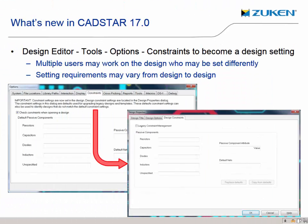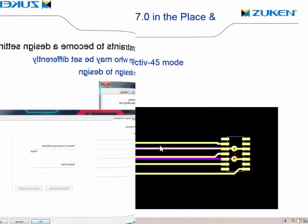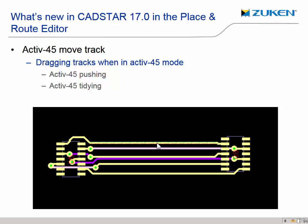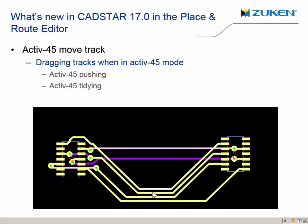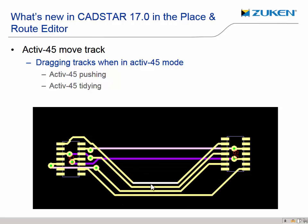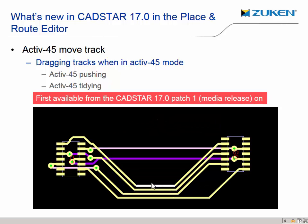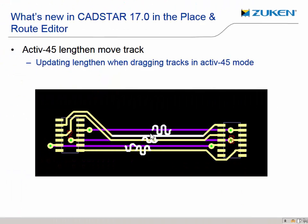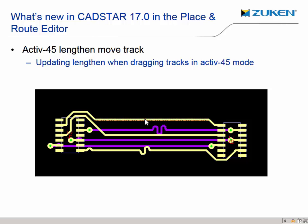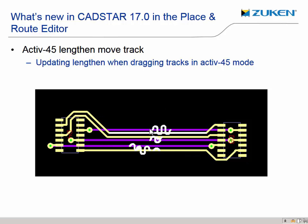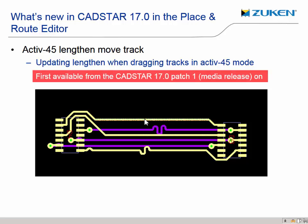Moving on to the high-speed side of CADSTAR, the design constraint settings are now set per design rather than per user, to prevent multiple users with different settings changing ENets and breaking skew groups. Recent releases of CADSTAR have seen improvements in the active 45 routing tool, further improved in CADSTAR 17 by enabling the dragging of tracks while in active 45 mode, although this functionality will not be available until the release of CADSTAR 17 patch one. Also, when dragging tracks while in active 45 mode, track lengthening will automatically update — again, this will not be available until CADSTAR 17 patch one.